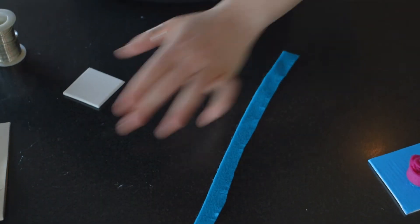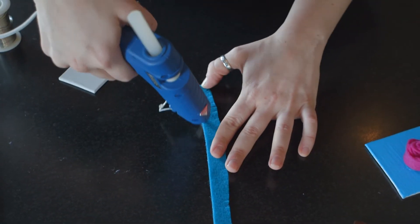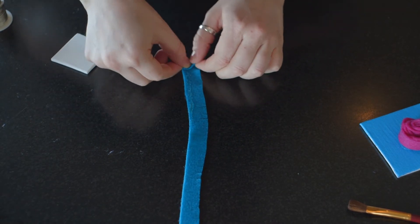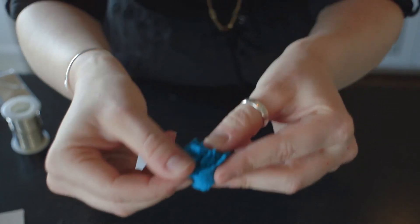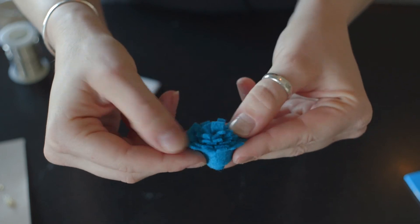And just like with the rose, same sort of process. Add your glue along the bottom part and start rolling it up. Then when it's all rolled up, just sort of like fluff it out like you did with the rose.